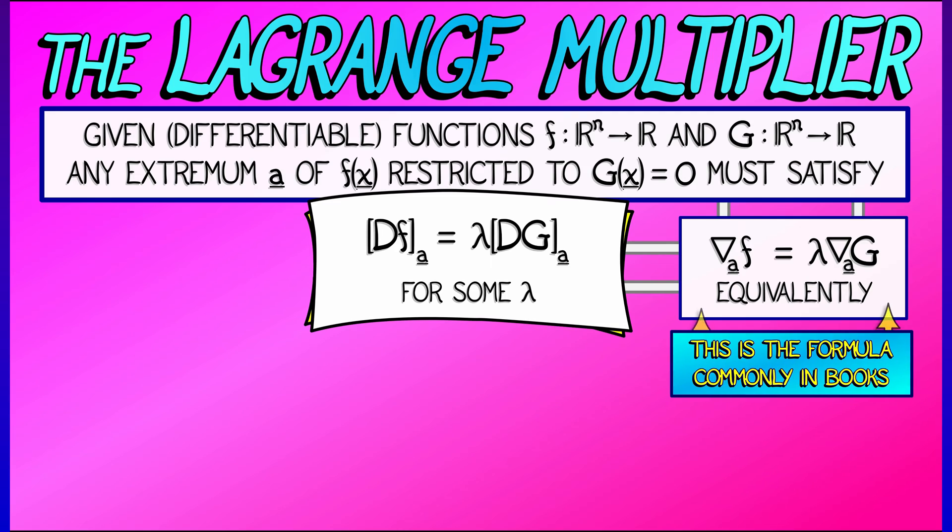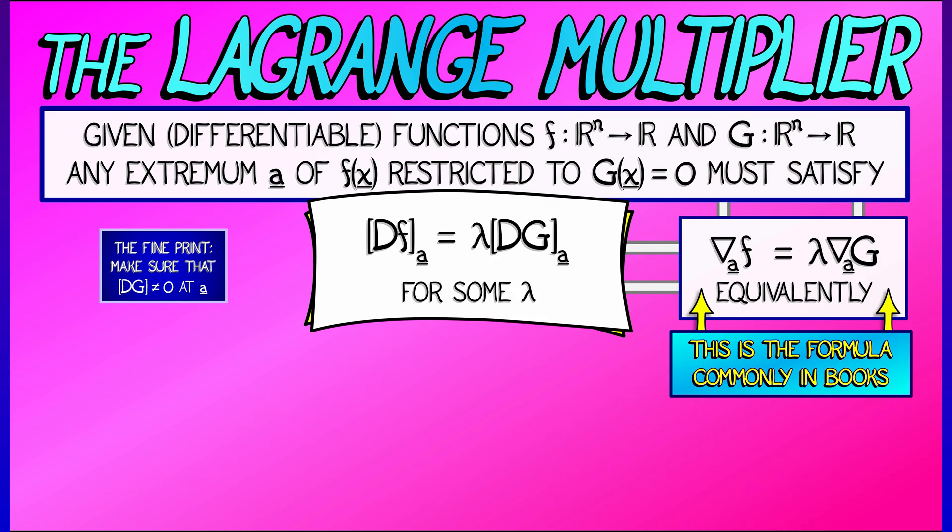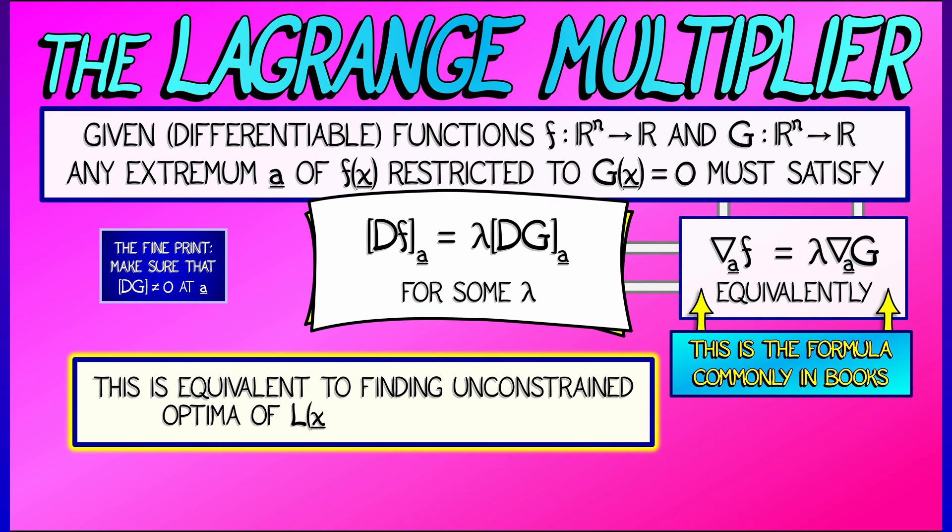I've written this in the language of derivatives, using matrices. You can rewrite it in terms of gradients and vectors. The gradient of f at a is lambda times the gradient of g at a. That's what you'll typically see in books. Pay attention to the fine print: better make sure that the derivative of g is non-zero, and then you're good to go.